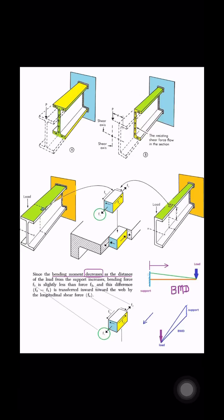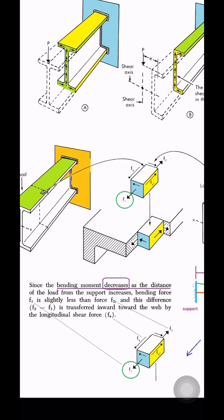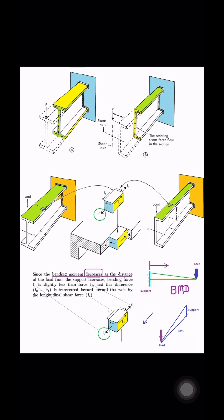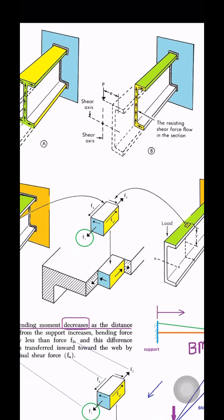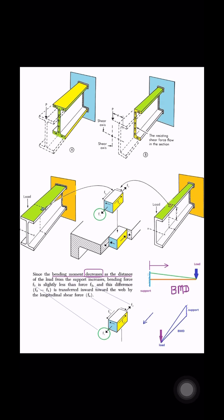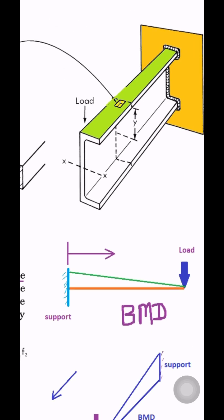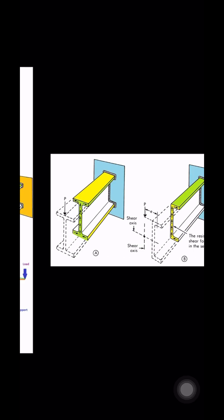Since this bending moment decreases as the distance of the load from the support increases, bending force f1 is slightly less than the force f2, and this difference of f2 minus f1 is transferred inward toward the web by longitudinal shear force fs. You can see it here, fs.